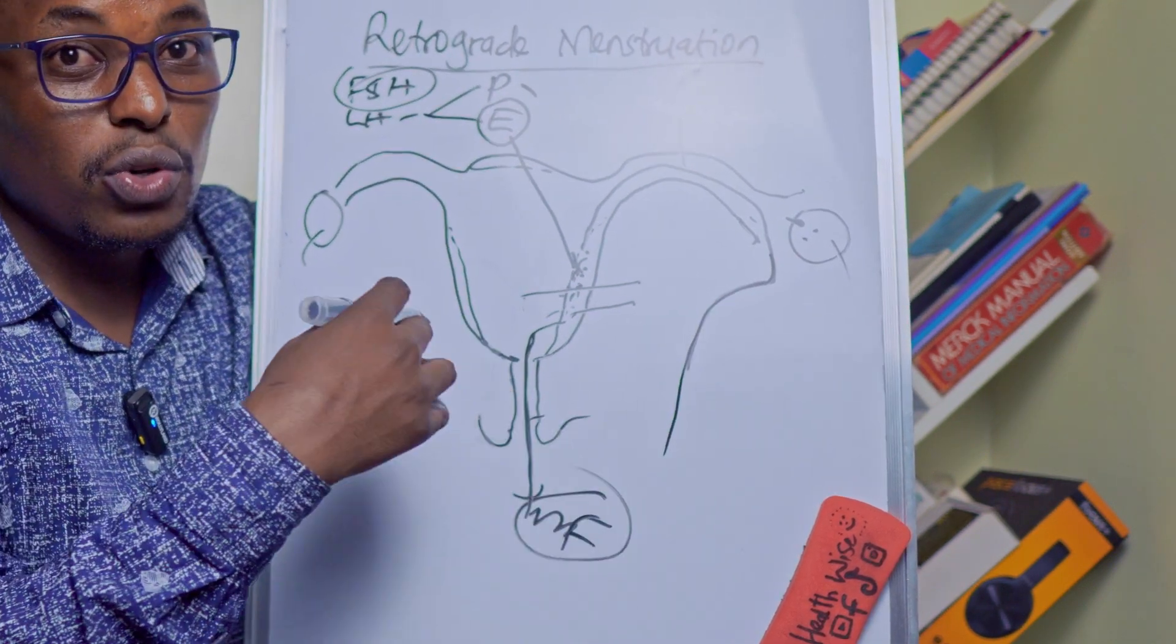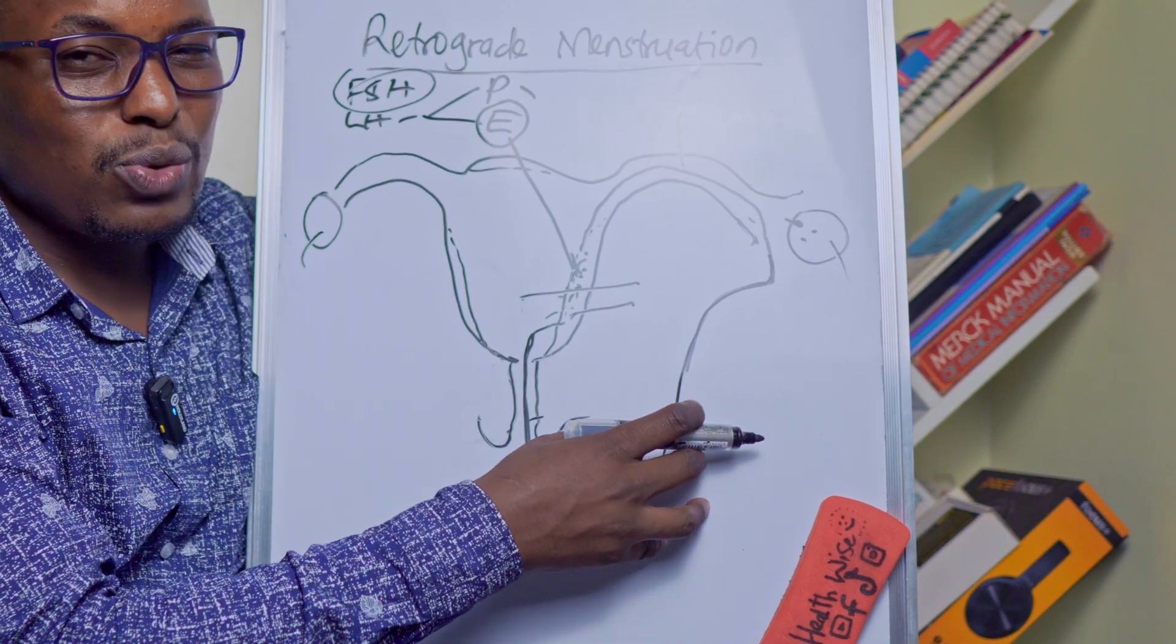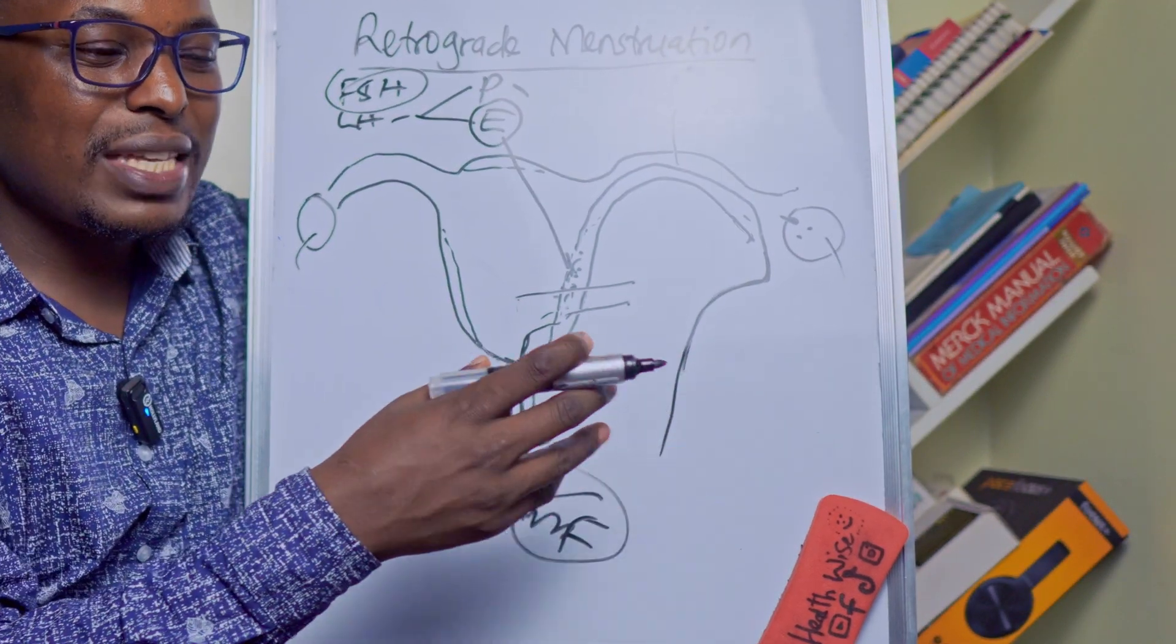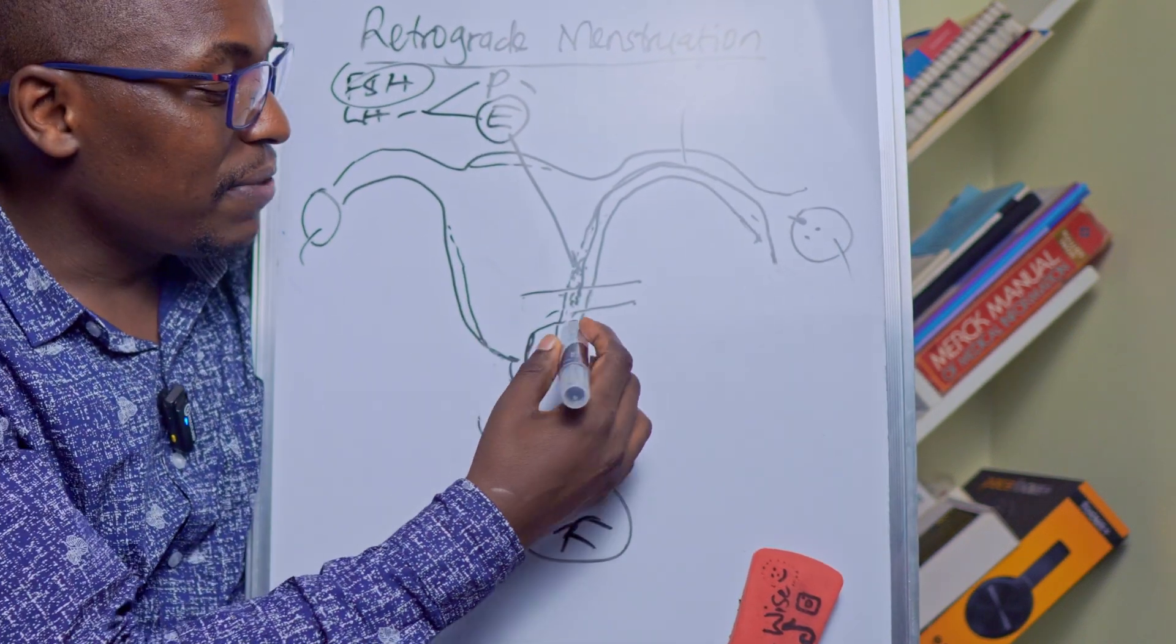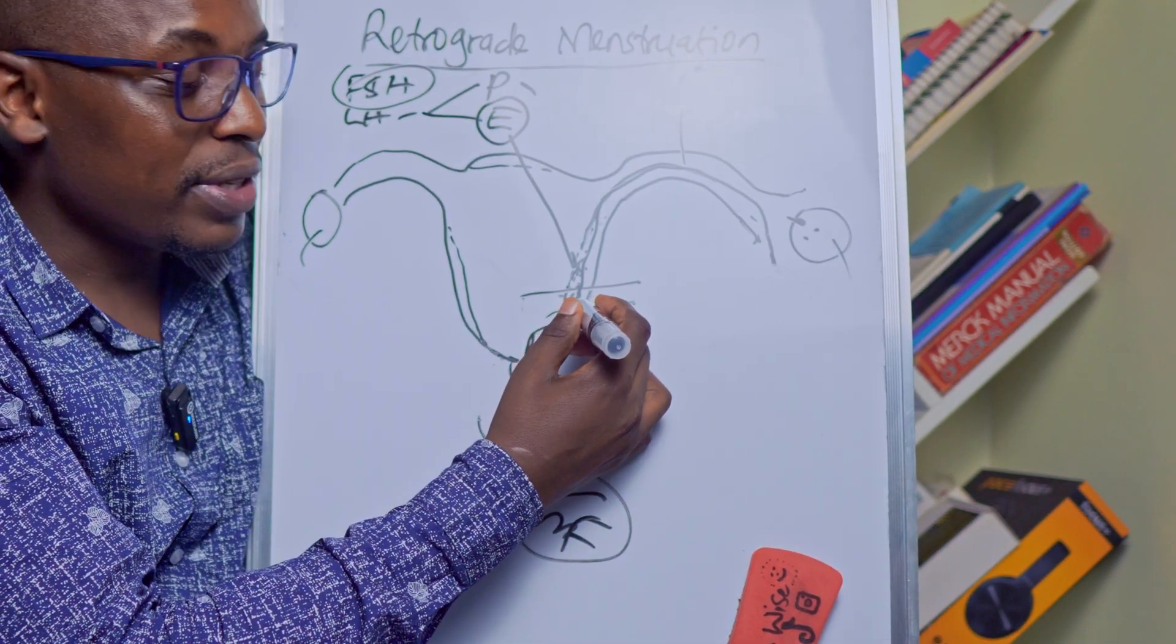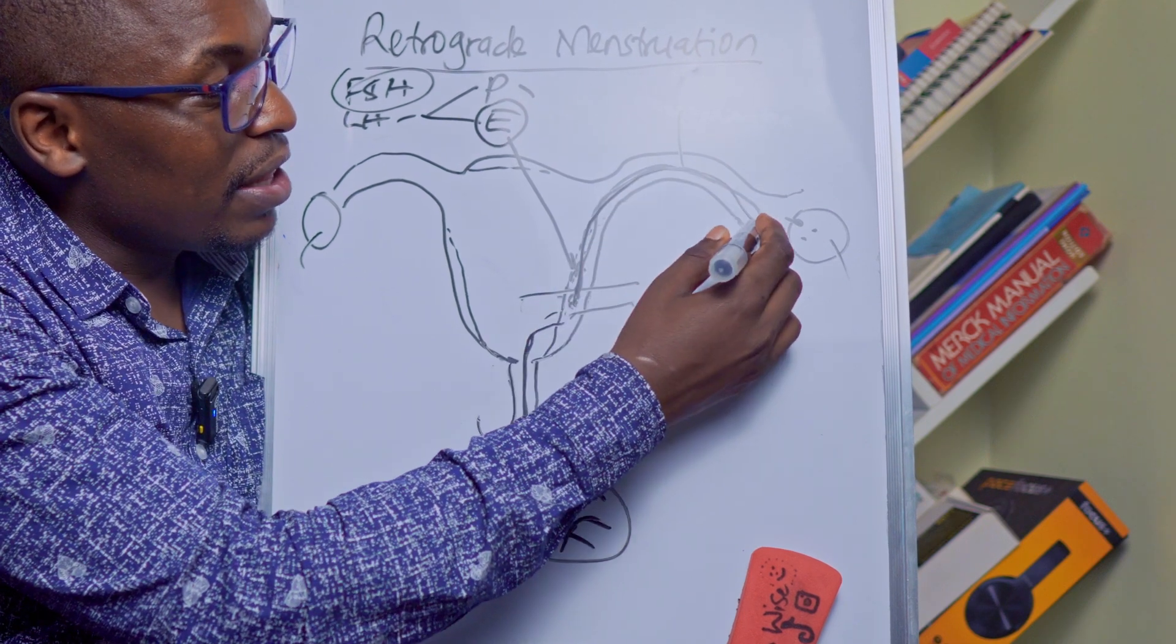It falls into your abdomen and this is what usually causes sometimes those undesirable effects when you're menstruating. Sometimes you might find that the cells here, the endometrial cells, are carried up.